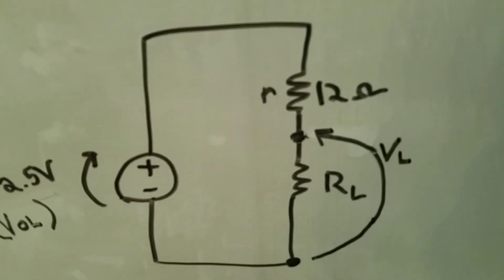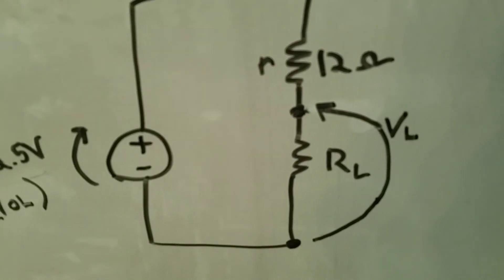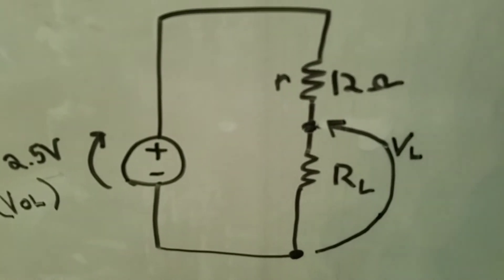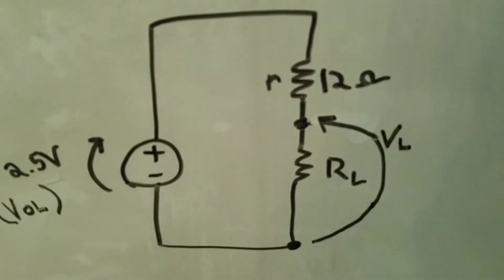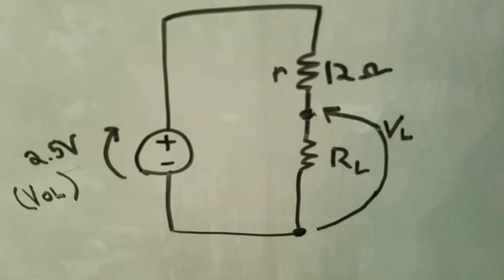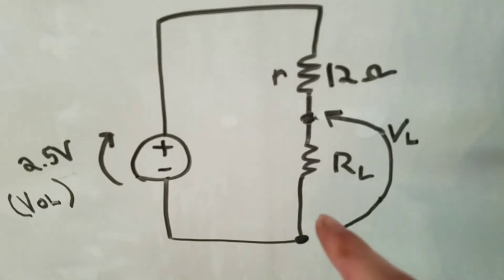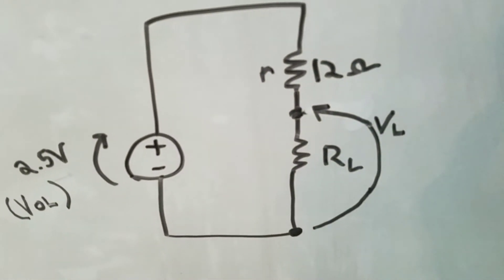However, if the load resistance was significantly higher, like a thousand ohms, then it would drop a proportionally greater amount of the voltage, and that's why when we use the 1k ohm resistor we saw a very almost insignificant voltage drop.